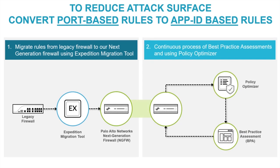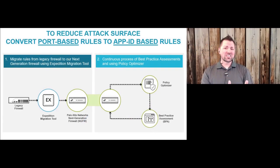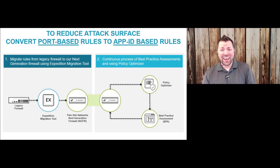You should not consider yourself done after the migration has finished. There is still more work to do, and this is where the policy optimizer comes in. It allows you to continuously assess your posture and make improvements — minuscule or major — depending on what the policy optimizer reveals. You should follow up after making those changes by taking your config through the best practice assessment tool, which gives you confidence that you're configuring your security rule set in the way recommended by Palo Alto Networks.